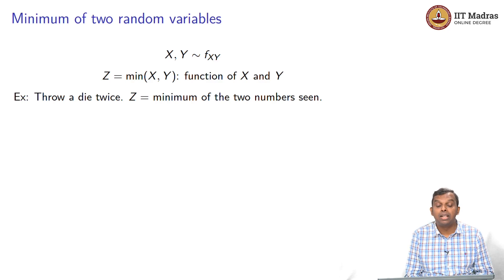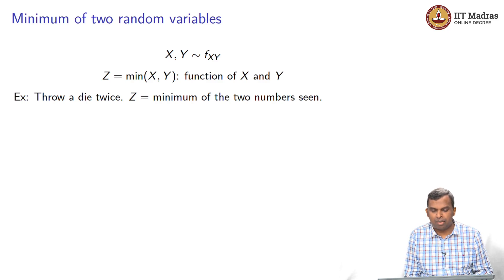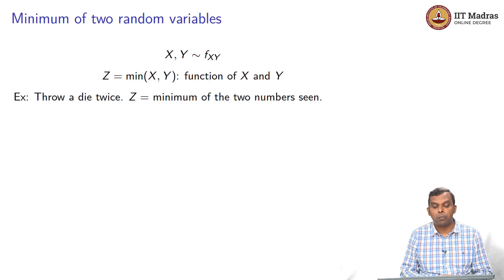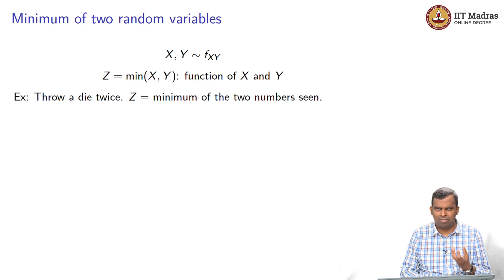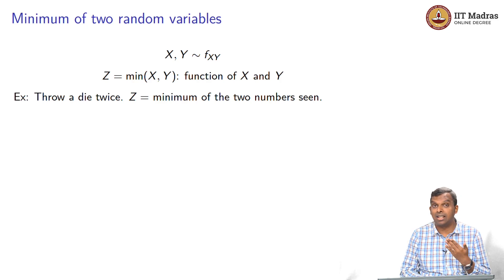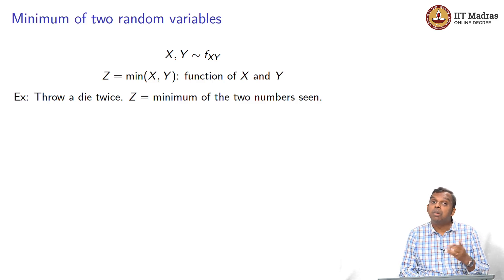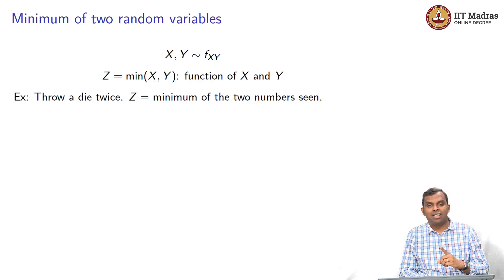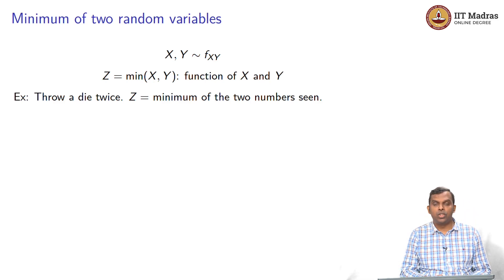Another function which is very common is minimum and maximum. Supposing you have two random variables X and Y which have a joint distribution, joint PMF f_XY, I can define Z as the minimum of X and Y. X is some value, Y is some value, I can of course take min of X and Y — it is a function of X and Y clearly. For example, you throw a die twice; Z is the minimum of the two numbers seen. You can imagine so many situations where you want to track how low or how high some value can go.